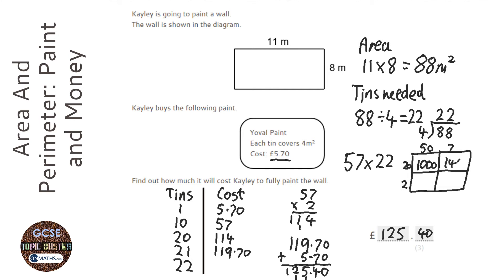2 times 7 is 14 with a 0. 5 times 2 is 10 with a 0. 2 times 7 is 14. So, that's going to be 1,254. And then, of course, we need to divide that by 10 because we made that £5.70 into 57. So, we've got to divide that by 10 which would be £125.4 which we know in money is £125.40.